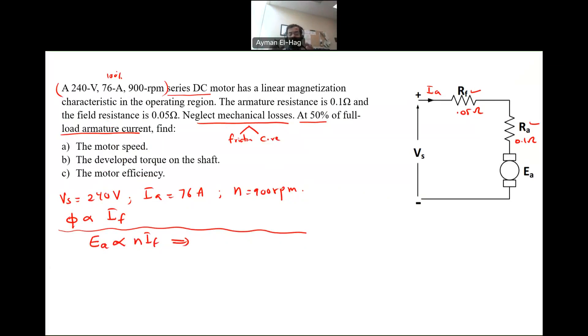Basically you will find these quantities at two different conditions. I would say Ea2 equal to N2 If2, and Ea1 is equal to N1 If1. Ea2 is at the 50%, Ea1 is at the 100%. These are the two different conditions of loading. Then we divide them, and basically what we are going to find is N2. This is our unknown. Let's find every single quantity.